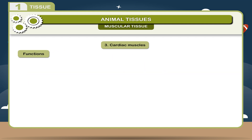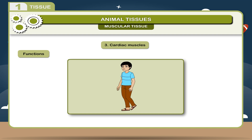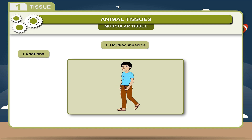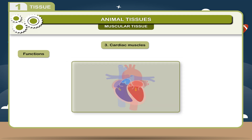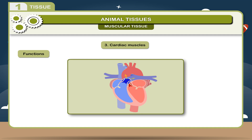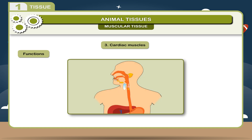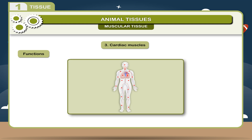Functions of Muscular Tissue: 1. The muscular tissues help in the movement of various parts of the body, and thus help in locomotion. 2. They also cause the movement of internal organs. 3. They help in the movement of food in the alimentary canal. 4. They also help in pumping of blood to the various parts of the body.